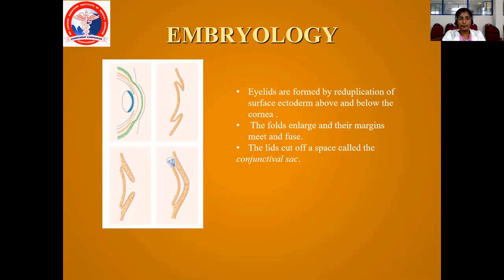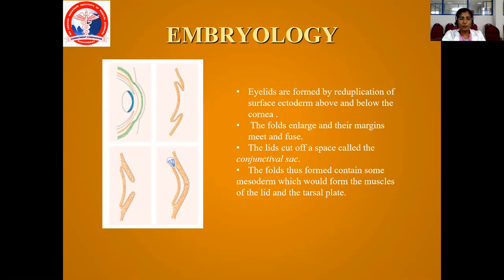The conjunctival sac is between your eyelids and cornea. Later, the lids separate and form the lid folds. The folds thus formed contain some mesoderm which forms the muscles of the lid and the tarsal lid. The muscles of the lid consist of the orbicularis muscle and Müller's muscle. From this mesoderm — you can see the blue color tissue — the muscles of the lid and the orbit are formed.